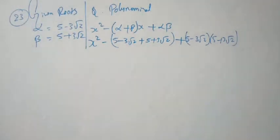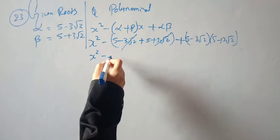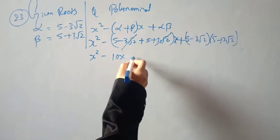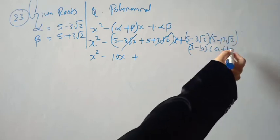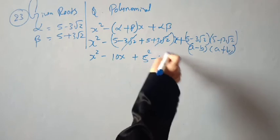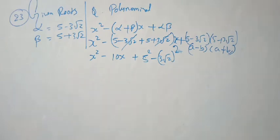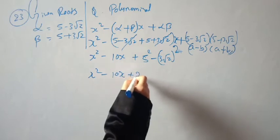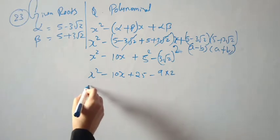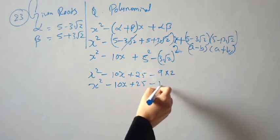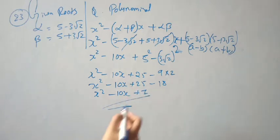Substituting: alpha + beta = (5 - 3√2) + (5 + 3√2) = 10, so the x term is 10x. For alpha × beta, using (a - b)(a + b) = a² - b²: a = 5, b = 3√2, so alpha × beta = 25 - (3√2)² = 25 - 9×2 = 25 - 18 = 7. Therefore the polynomial is x² - 10x + 7.